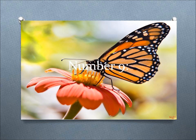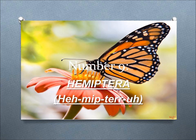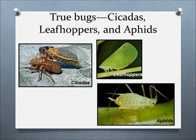Number 9, Hemiptera. This order includes true bugs, or any insect that has a modified mouthpart called a rostrum, that is used for piercing and sucking liquid food.